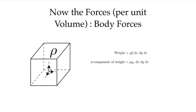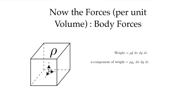Now that we've looked at the inertia term — the mass times acceleration — it's time to look at the forces, specifically the forces per unit volume. Let's start with the easiest one: a body force. If there's a mass in this volume, there will be a body force, which is the mass per unit volume times the acceleration due to gravity. That gives us the weight of the fluid in that volume, per unit volume.